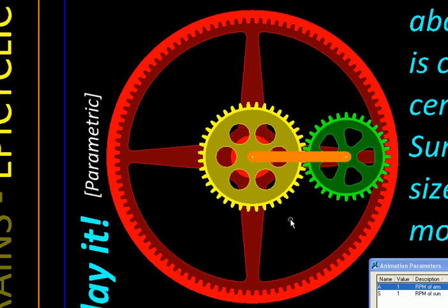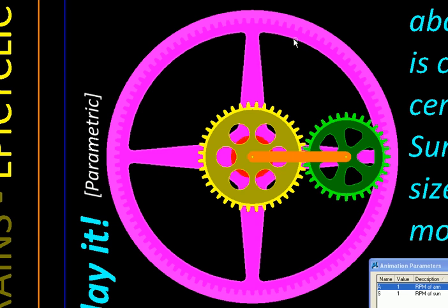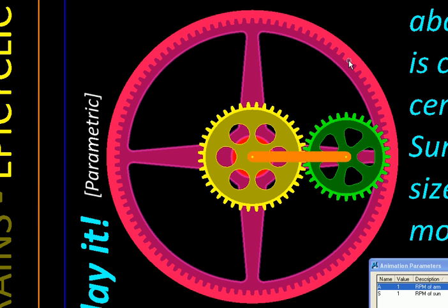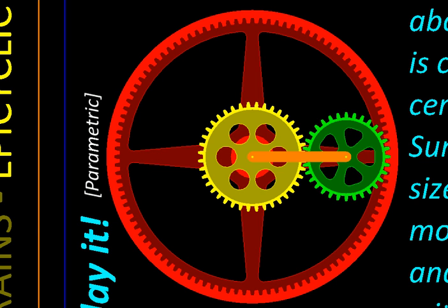We are going to do two generalizations. Number one, the sun and the planet could be of different size. And number two, though the axis of the sun is fixed, it is free to rotate about that axis. In physical arrangements, the sun and the planet are connected by a link like this which supports the planet. This is called as the arm. And additionally we may have an internal gear going around this whole arrangement and engaging with this planet. It is called as the annulus or the ring gear. This sort of gear trains are called as epicyclic gear trains, where one or more gears will have their axis orbiting in space.